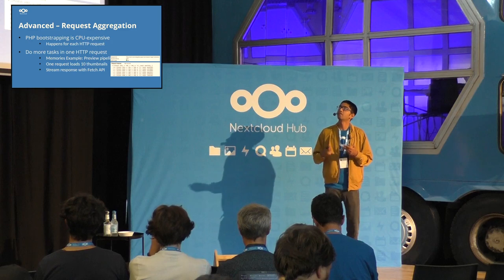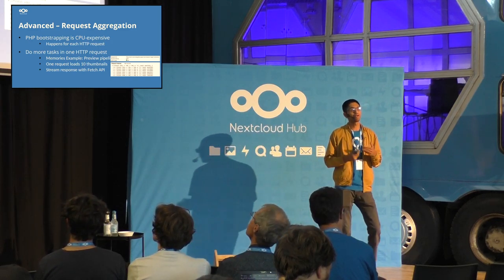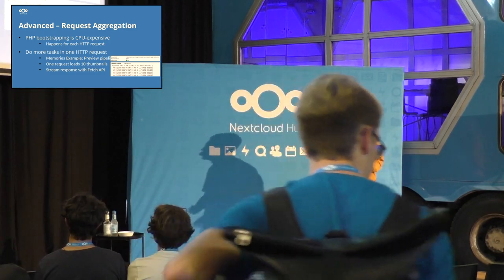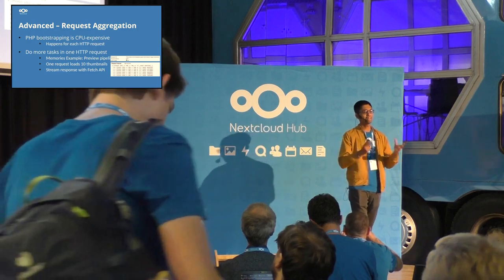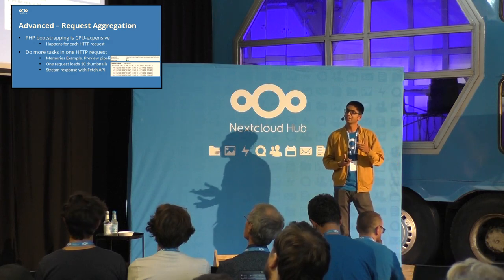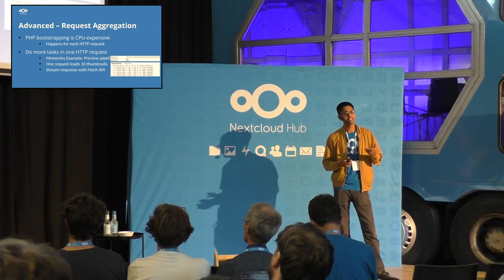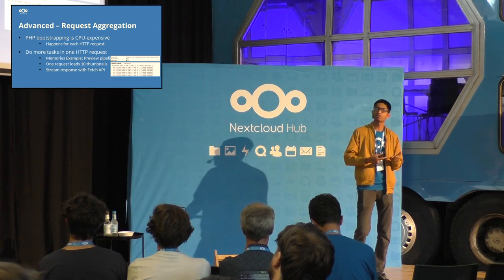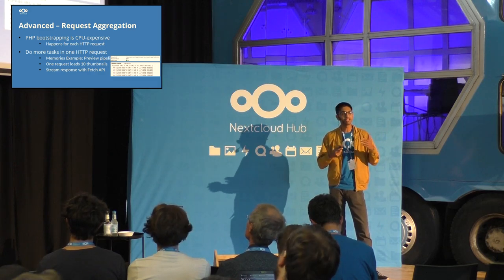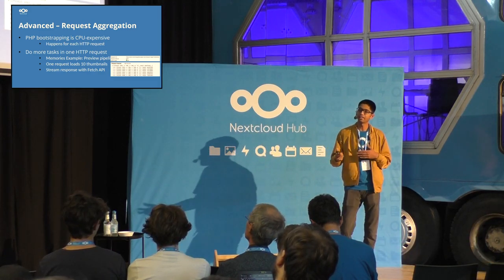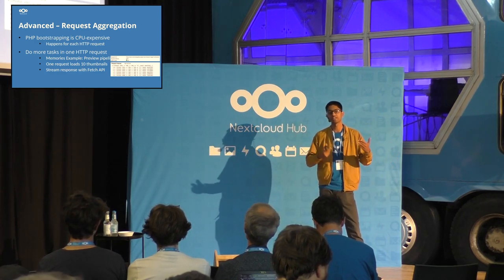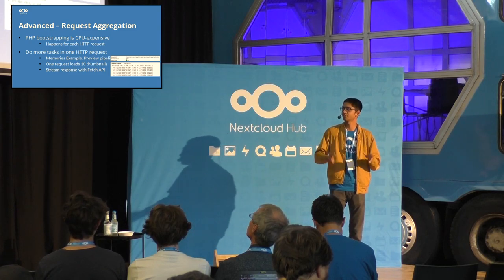More advanced: when you're building a PHP app, each request causes a lot of bootstrapping. For every app installed in your Nextcloud instance, it gets initialized and registers hooks. This PHP architecture makes it easy to scale, but also makes each request a bit more expensive. So what you can do is do more in one request rather than making many smaller requests. What Memories does is instead of loading one thumbnail per HTTP request, it uses one request to load multiple thumbnails. This simple optimization cut down CPU utilization by almost 50 to 60%.